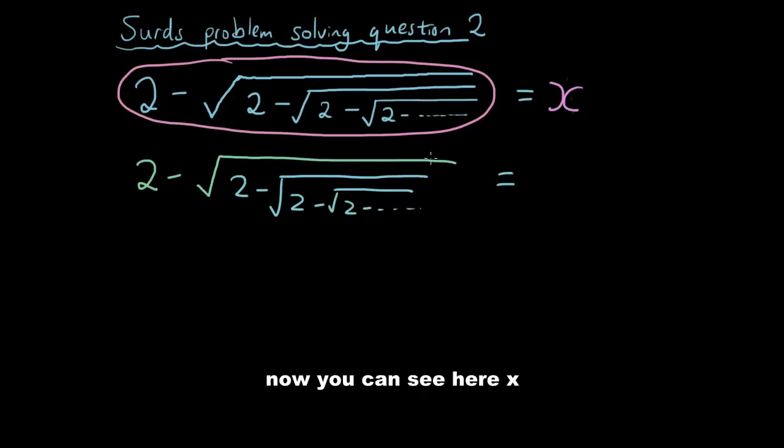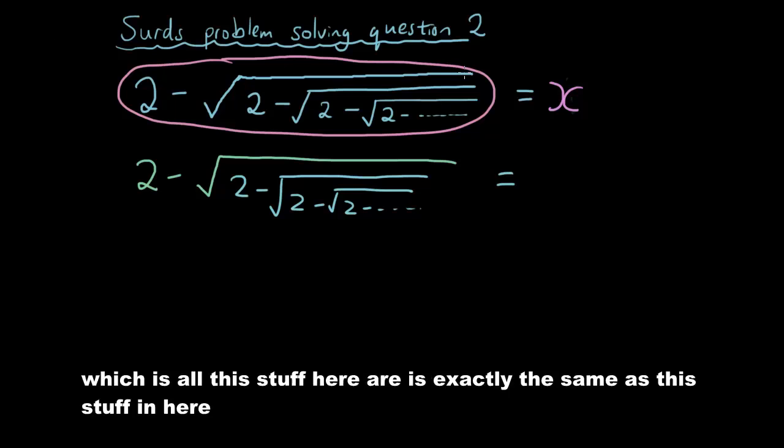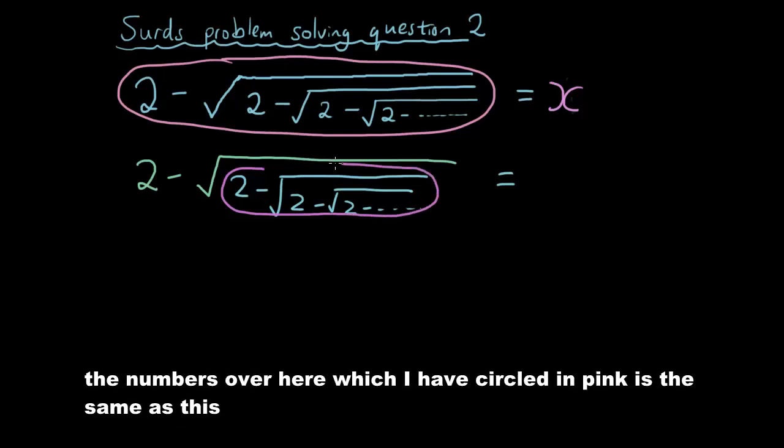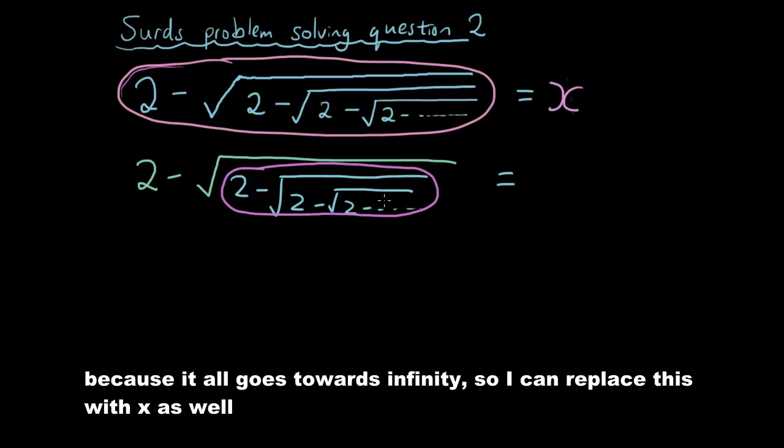Now you can see here, x, which is all this stuff here, is exactly the same as this stuff in here. The numbers over here which I have circled in pink is the same as this because it all goes towards infinity. So I can replace all of this with x as well.